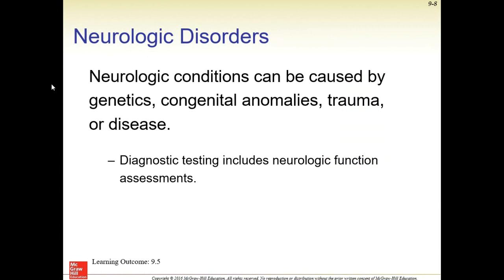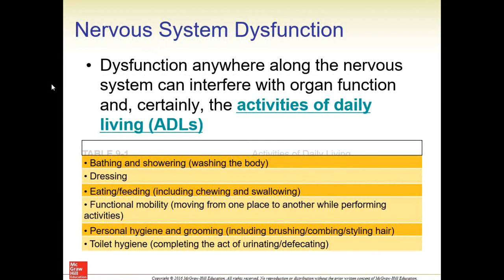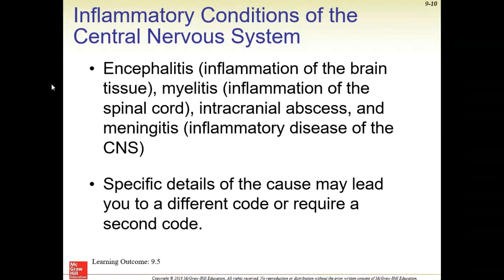Neurological disorders can be caused by different reasons: genetics, congenital or present at birth, trauma, or disease. Some of the dysfunction with the nervous system interferes with activities of daily living — this was a table from our book. Some of these activities would include hygiene, dressing, eating, feeding, functional mobility, and so on.